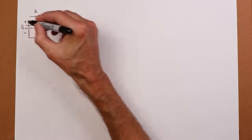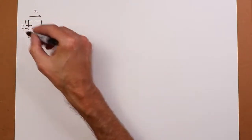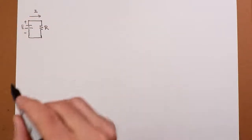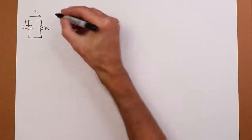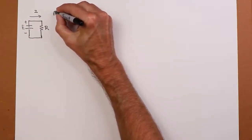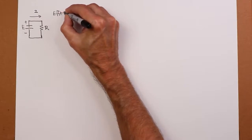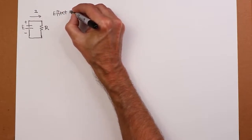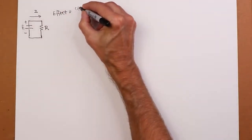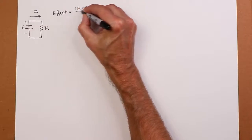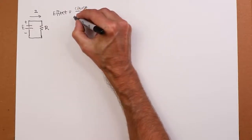So if we start off with this source E, the question becomes: given values for E and R, what is I? Well, we can think of this in terms of an effect equaling a cause divided by an opposition.